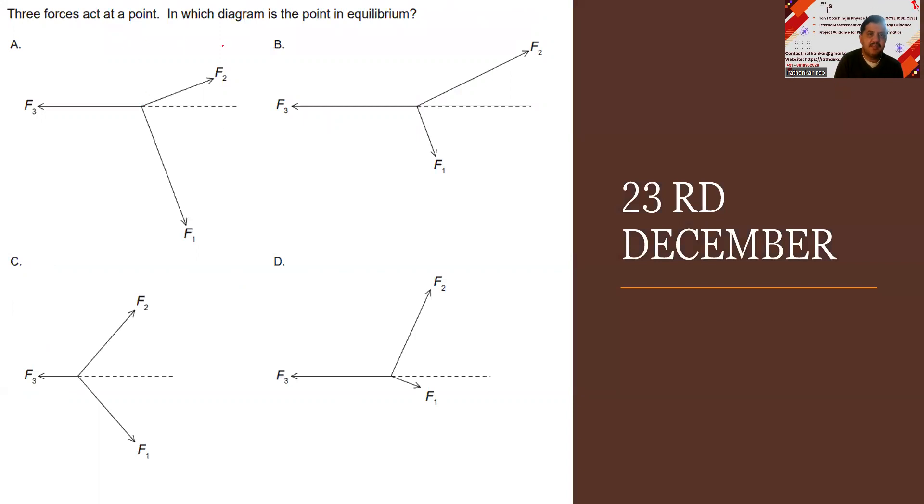Three forces act at a point. In which diagram is the point in equilibrium? Three forces are acting here: F2, F1, F3. How do you ensure which one is equilibrium? I will just give a clue here. The clue is try resolving the forces along the x and y axis to get an answer for this. I have not revealed the whole thing. I hope by this time you had already got what could be your answer.